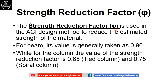For beams, the value of φ is generally taken as 0.90, while for columns the value of the strength reduction factor is 0.65 for tied columns and 0.75 for spiral columns. A detailed video about tied and spiral columns is already uploaded on the channel — you can watch that by clicking the icon or visiting the link given in the description box.